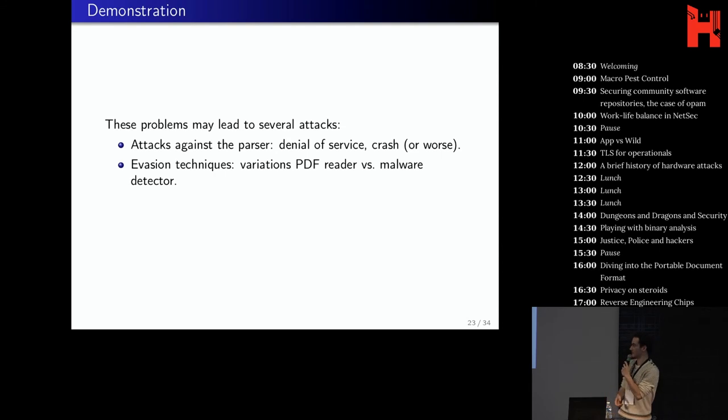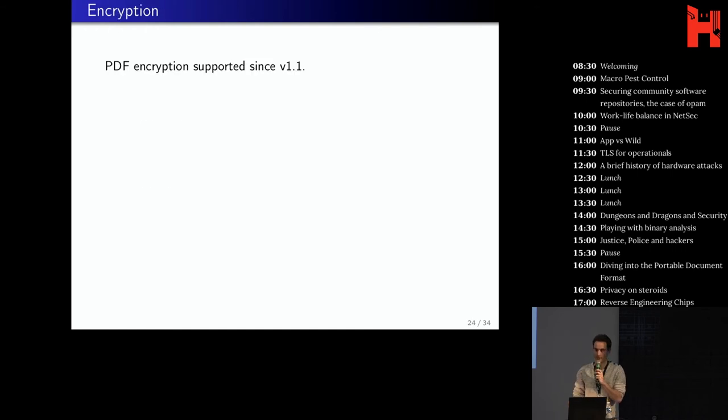So let's go back to the presentation. So we have seen several problems, and I think they can lead to several kind of attacks. So first, you can attack directly the parser for a denial of service, or make it crash, or even worse. And second, the polymorphic property can allow you to evade malware detectors, because if there are variations between the PDF reader and the malware detector parsers, they will see different content, and then you cannot detect the malware that you're looking for.